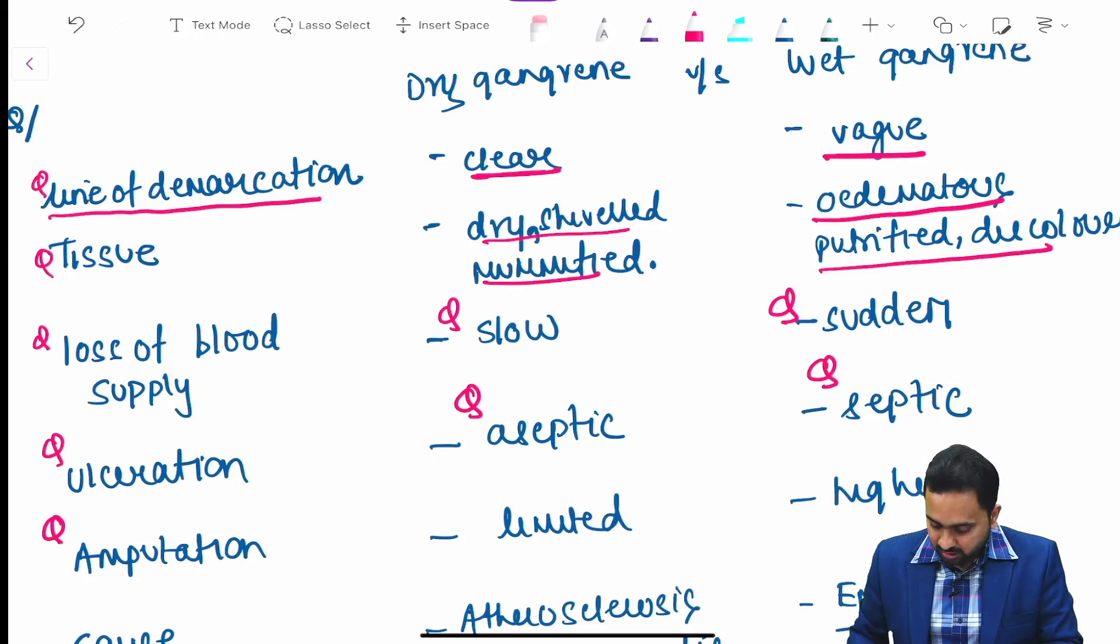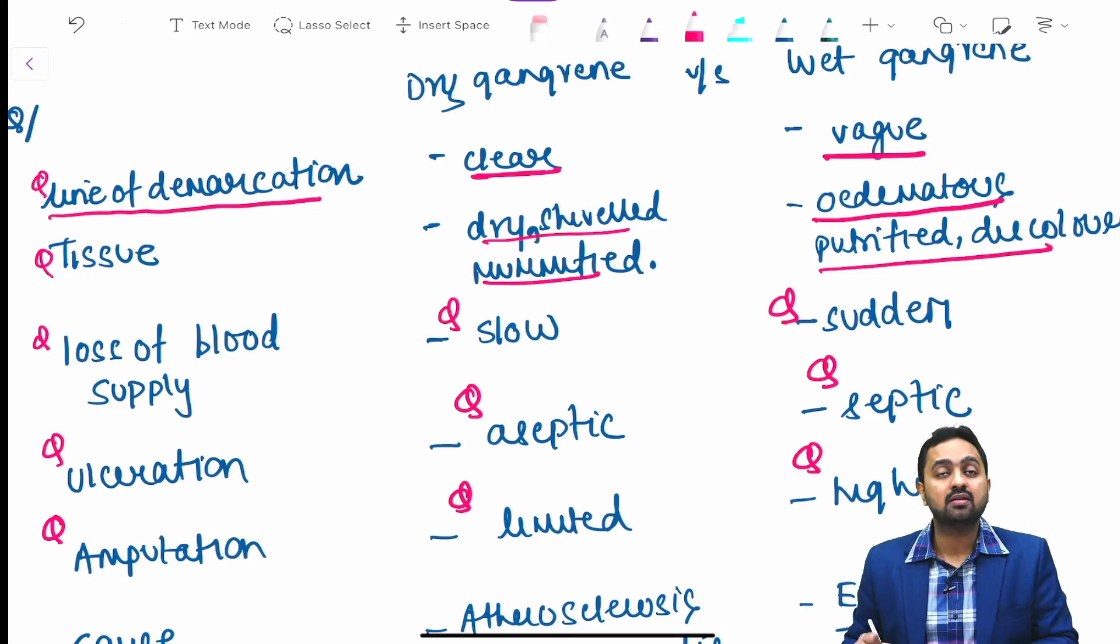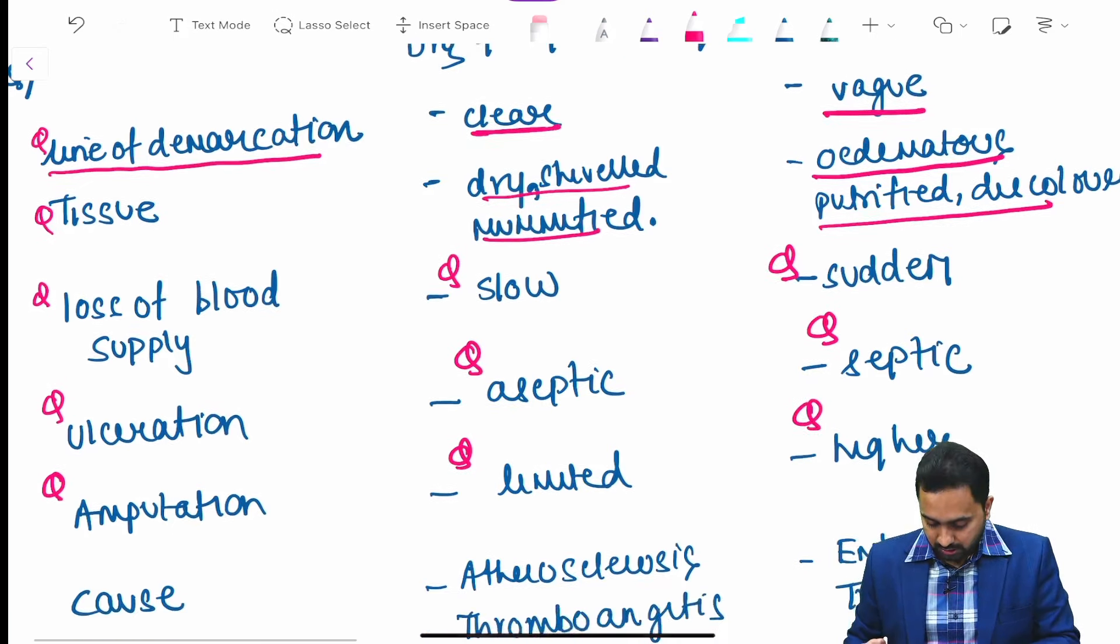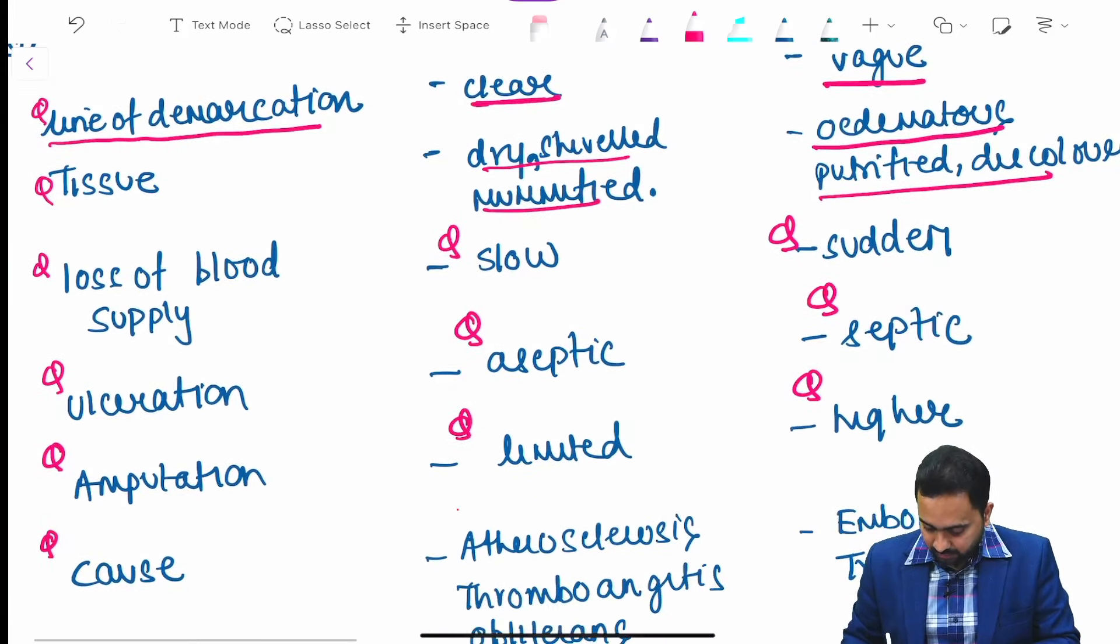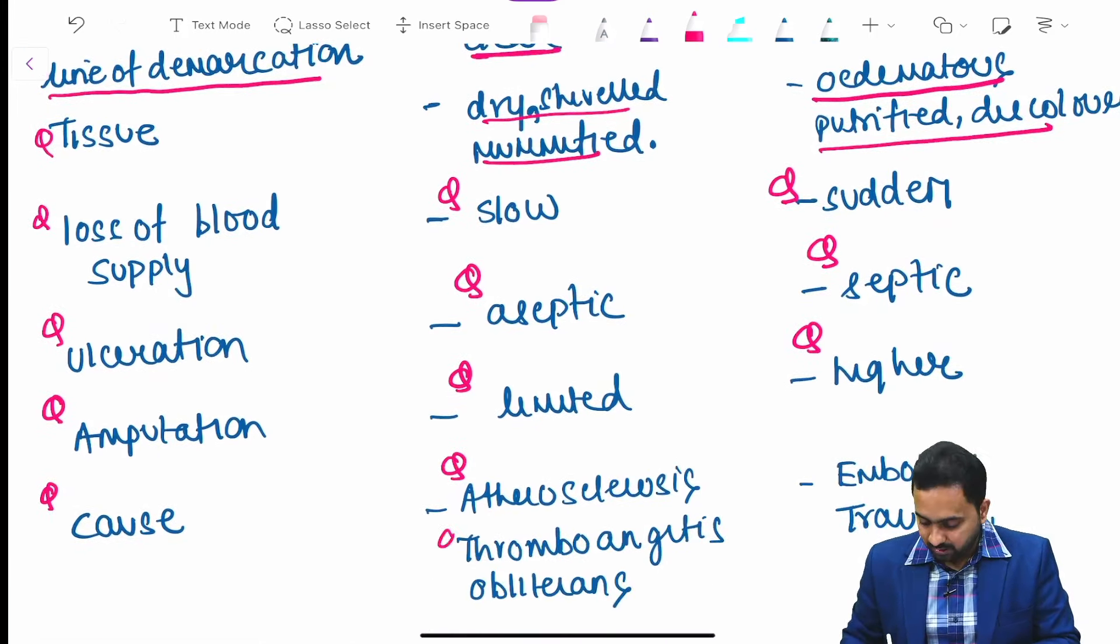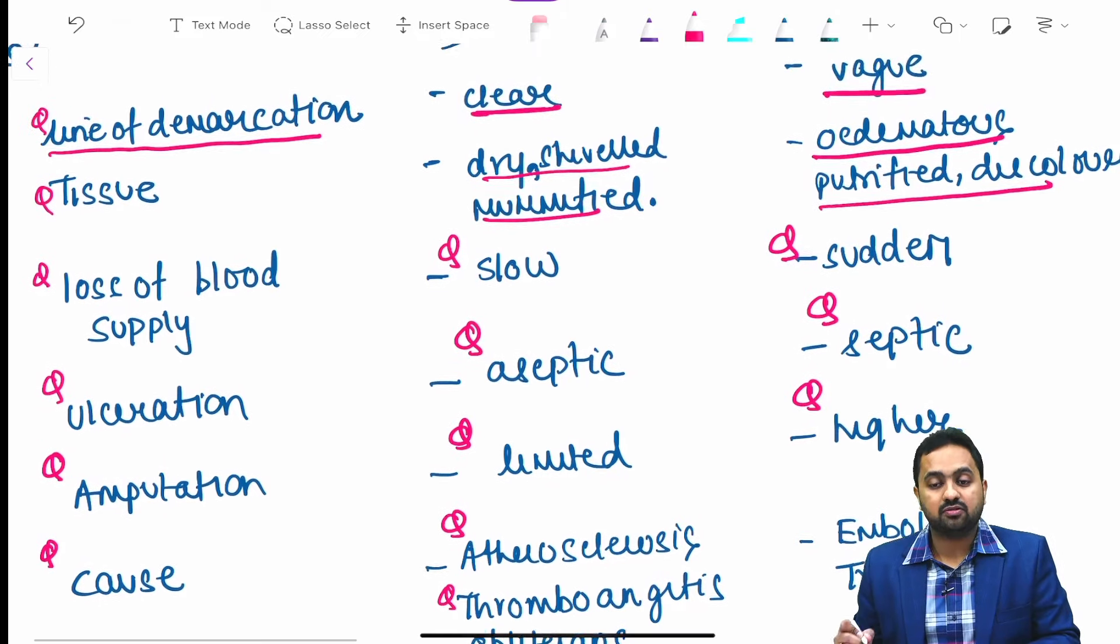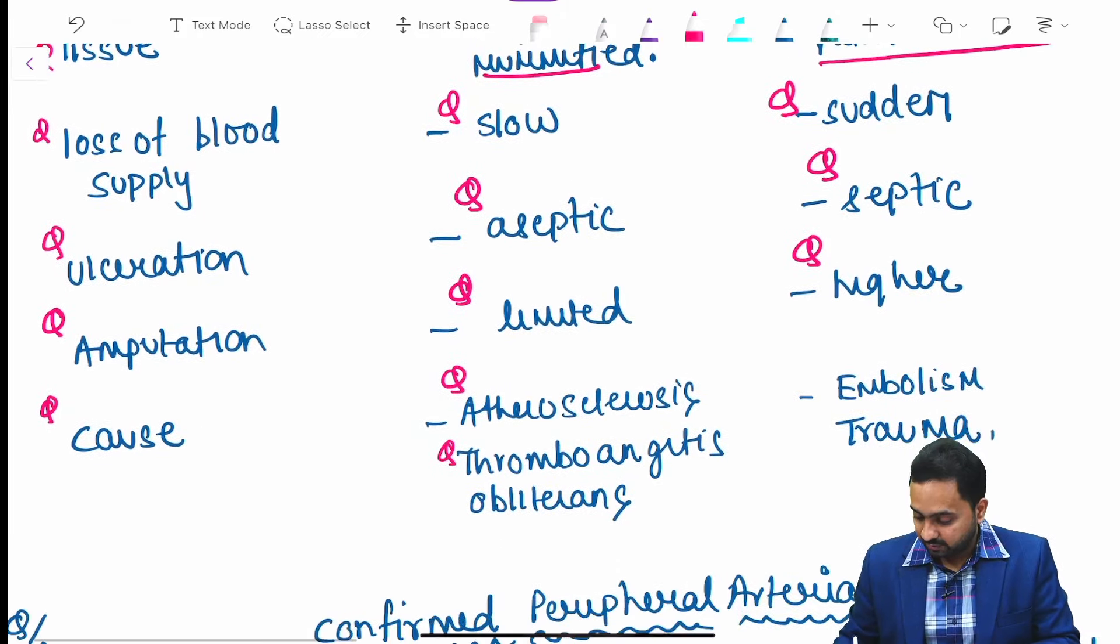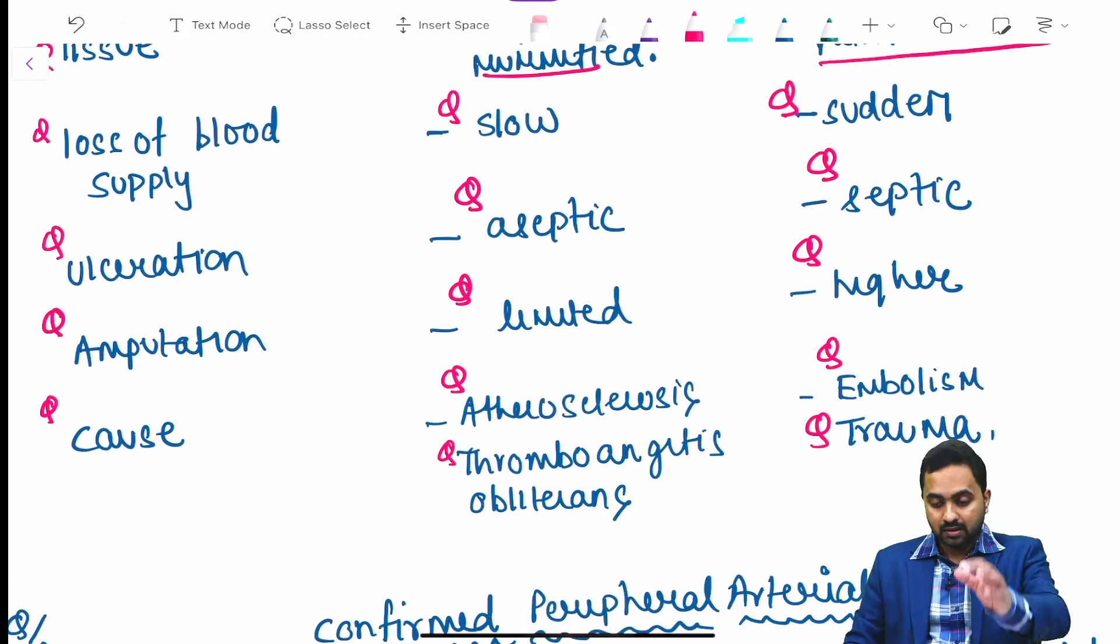Amputation is limited in dry gangrene whereas higher level is needed in wet gangrene. Causes would be atherosclerosis or thromboangiitis obliterans or Buerger disease in dry gangrene, whereas embolism or trauma in wet gangrene.